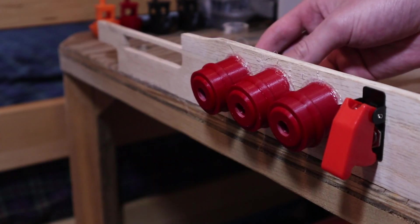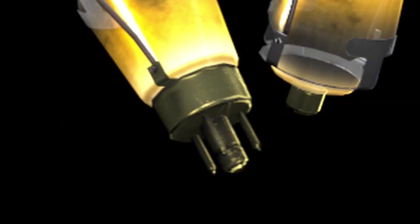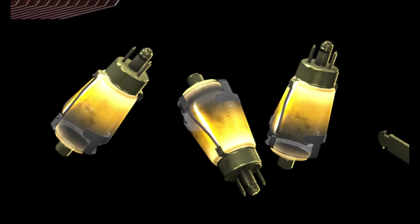All that's left now is to light it up. Amazingly, the vacuum tubes in the game have three metal prongs coming out of the bottom, which is the same number of connections needed to power an RGB LED. I love when that happens.